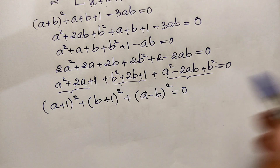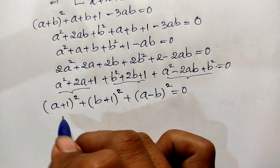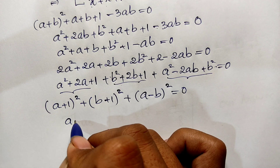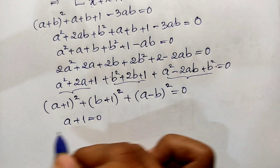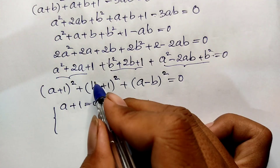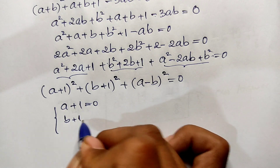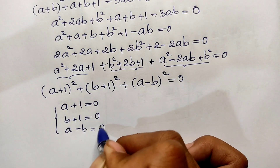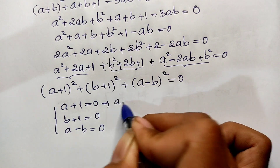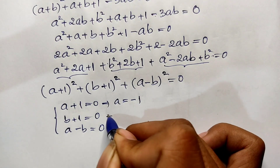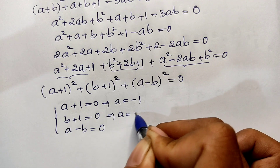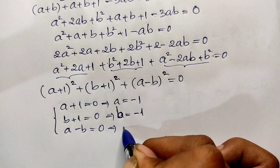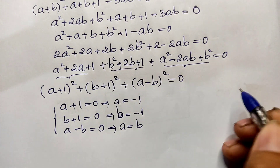Since (a + 1)² + (b + 1)² + (a - b)² = 0 and each term is a perfect square, all three must equal zero simultaneously. So a + 1 = 0, b + 1 = 0, and a - b = 0, giving a = -1 and b = -1.